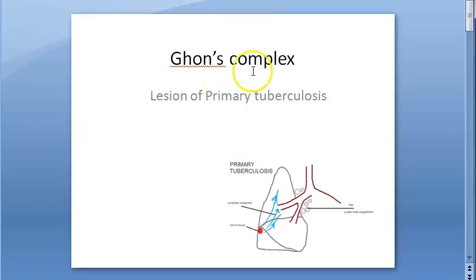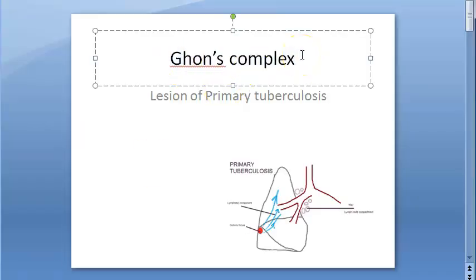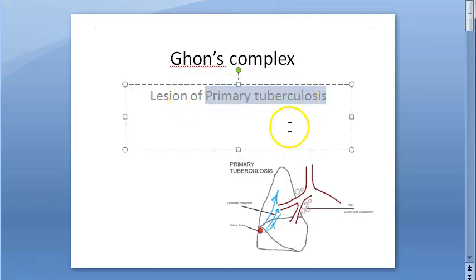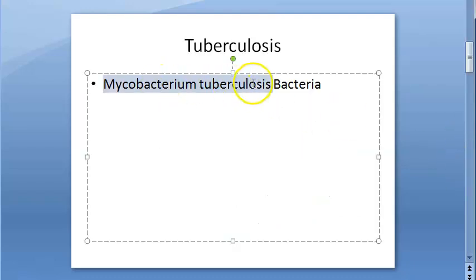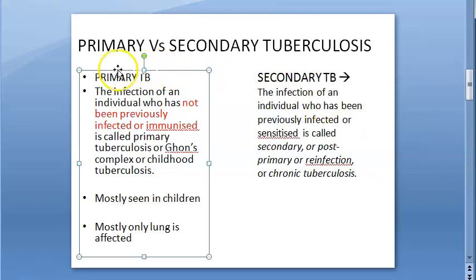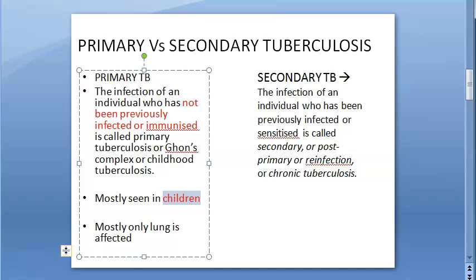In this video we want to look at what Ghon's complex is. Ghon's complex is a complex of three things — there are three things in this Ghon's complex which form this complex. It is seen in primary tuberculosis, a disease caused by Mycobacterium tuberculosis. There are two types of tuberculosis: primary and secondary. Primary means somebody who never got infected before — first time getting infection. That is primary tuberculosis, and it is mostly seen in children.